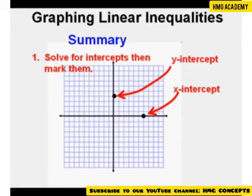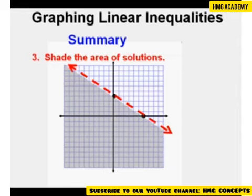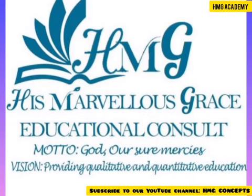To summarize: first, find the x and y intercepts by covering the y and x terms respectively, then solve and mark the intercepts. Draw the boundary line — dashed for strictly less than or greater than, and solid for equal to. Shade above for greater than and below for less than the boundary line. Finally, use a point to check if the correct area was shaded; 0,0 is usually the best coordinate to use since the calculations are easy. This has been graphing linear inequalities from standard form. Thanks for viewing.